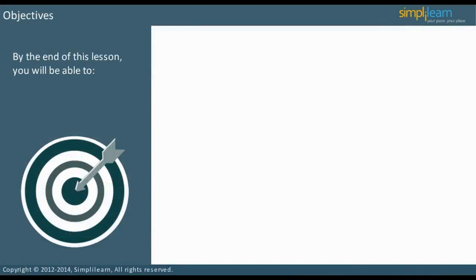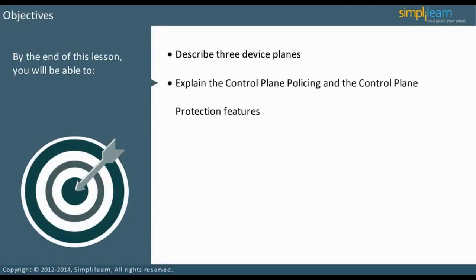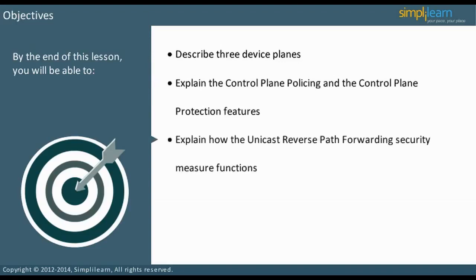By the end of this lesson, you will be able to describe three device planes, explain the control plane policing and the control plane protection features, explain how the unicast reverse path forwarding security measure functions, and discuss Cisco's firewall options.